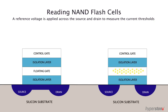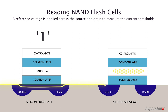To read the value stored in the cell, a reference voltage is applied across the source and drain and then the current is measured. The current at which the gate switches varies depending on whether the floating gate contains charge or not. This makes clear whether the NAND flash cell is programmed or not.